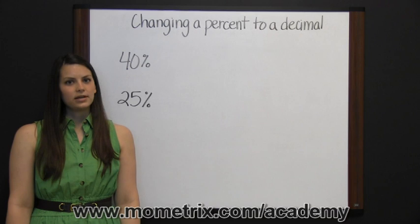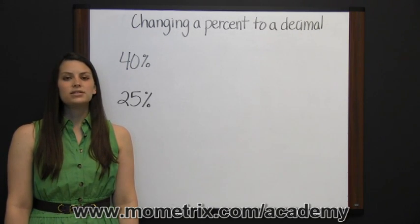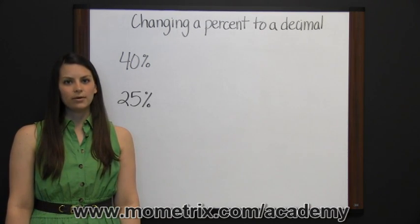The first method is to change the percent to a fraction, and then to convert the fraction to a decimal by dividing the numerator by the denominator.